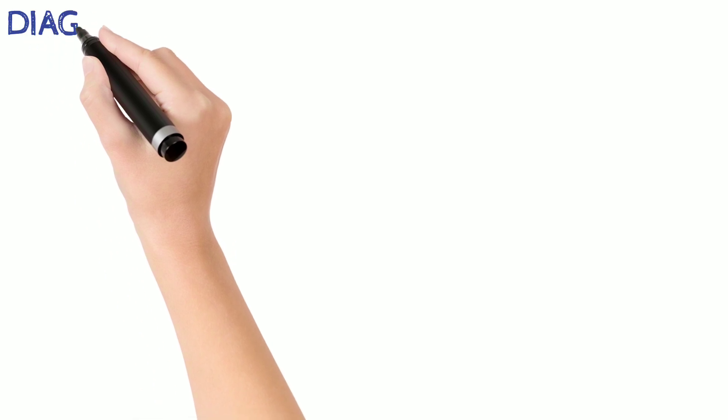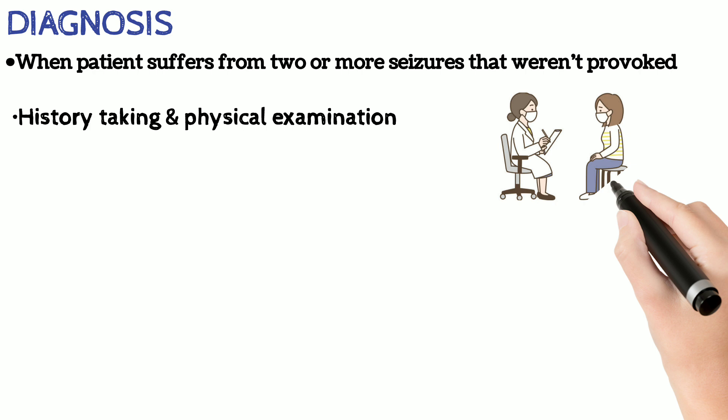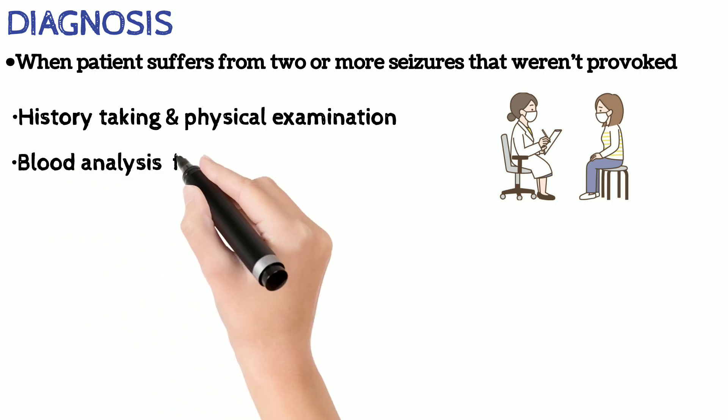Epilepsy is said to be diagnosed when the patient suffers from two or more unprovoked seizures, which is primarily diagnosed by history taking and physical examination of the patient. Blood analysis can be done for provisional diagnosis and ruling out conditions like hypoglycemia.